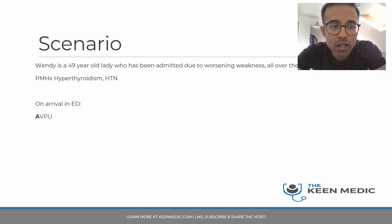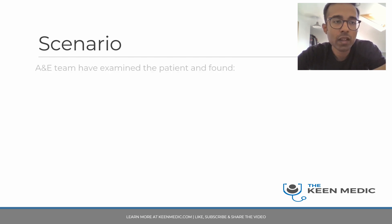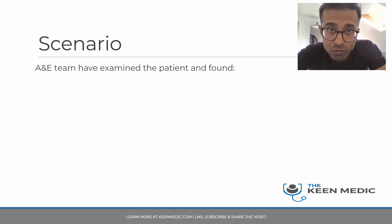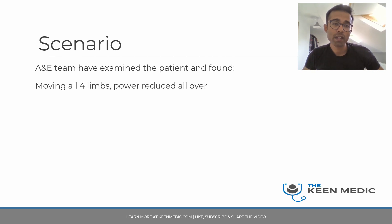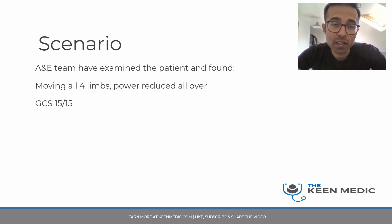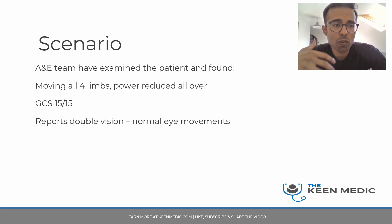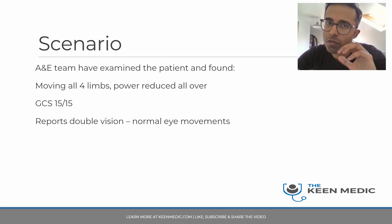On arrival in A&E, she is alert. Temperature is normal at 36.8, heart rate of 78, blood pressure is normal at 124/73, respiratory rate is fine, saturations are normal as well - basically all the obs are fine. The A&E team have examined the patient and found that she's moving all of her four limbs, but the power is reduced all over - there's a global reduction in power all over. GCS is 15. She reports double vision, though, but she's got normal eye movements according to the A&E team. So we need to dig into this a bit more.